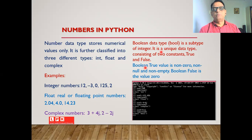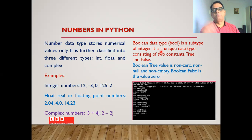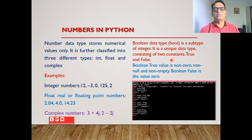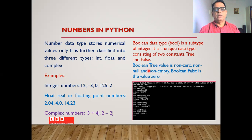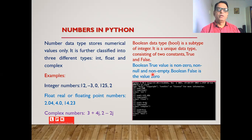As far as the boolean data type is concerned, it is a kind of subtype of integer. It is a unique data type consisting of only two constants: True and False. In Python, boolean True means a non-zero, non-null, or non-empty value, and boolean False means a zero value.